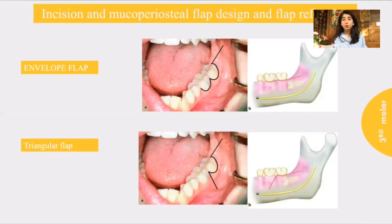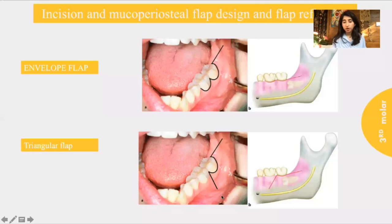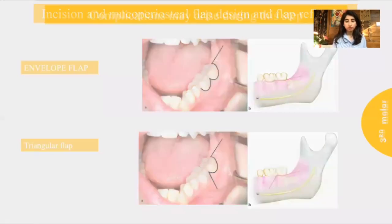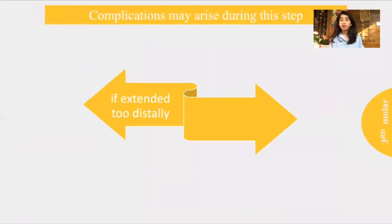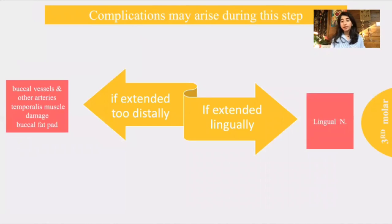The most common two types of flaps are the envelope flap and the triangular flap. Both flaps start distally by making a horizontal incision on the anterior border of the ramus of the mandible, slightly lateral to it, continuing with an incision on the buccal sulcus of the second molar. From here, we either continue to make the incision on the buccal sulcus of the first molar — the envelope flap — or we continue downward to make a vertical incision below the tooth — the triangular flap. If we extend the incision too distally, it may lead to injury to the buccal vessels, temporalis muscle damage, or herniation of the buccal fat pad. If extended lingually, it may lead to lingual nerve damage.